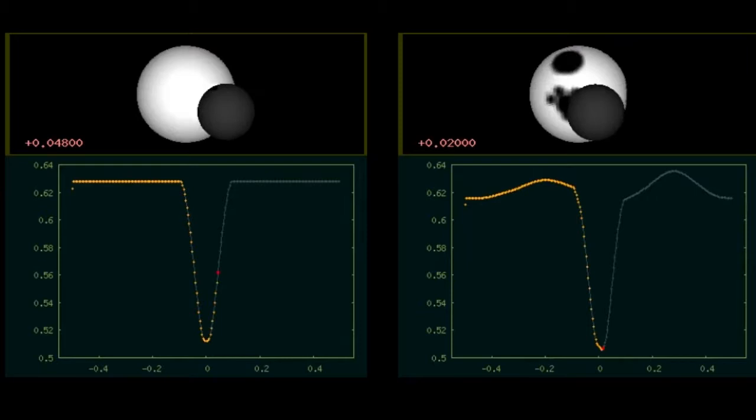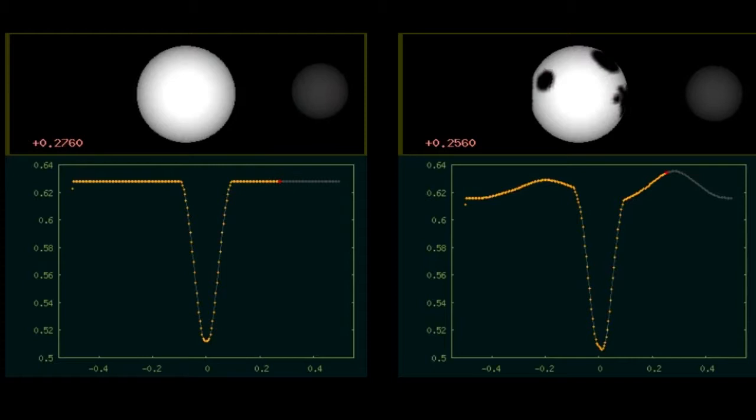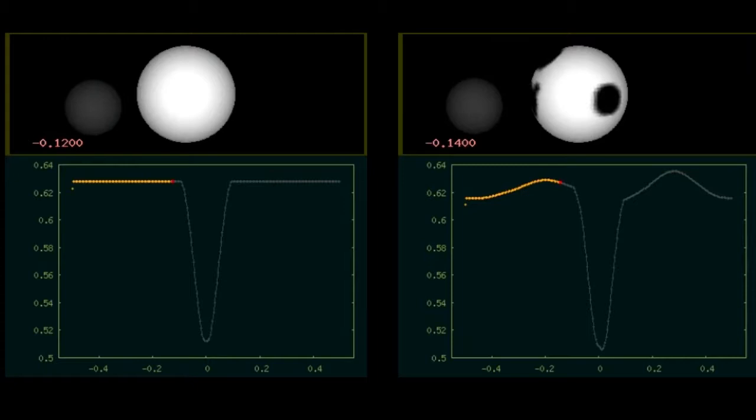The inverse problem, however, getting 2D images from 1D light curves, is highly ill-posed, in the sense that there will be an infinite number of maps or solutions, some of them even highly unphysical or improbable, that will fit the data within the measurement errors.